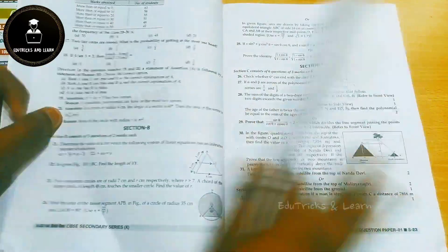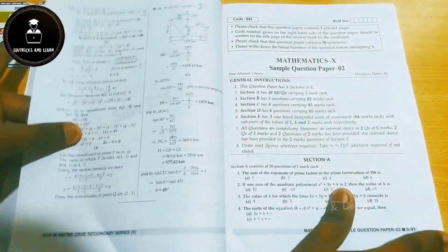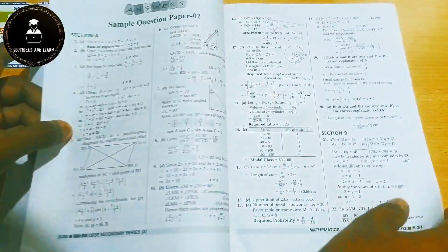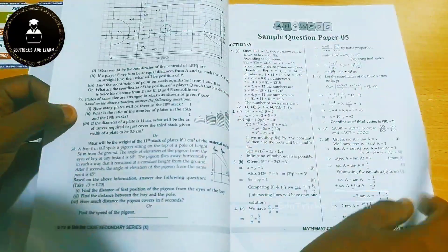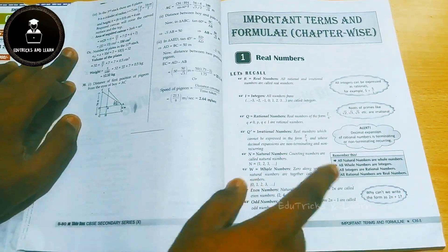From second sample paper to fifth sample paper, they have given Shivdas sample papers and the answers are also given at the last. So they have provided five sample papers, and then they have given the important terms and formulas chapter-wise.